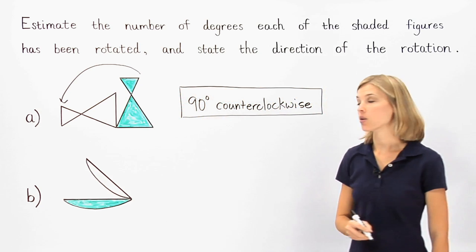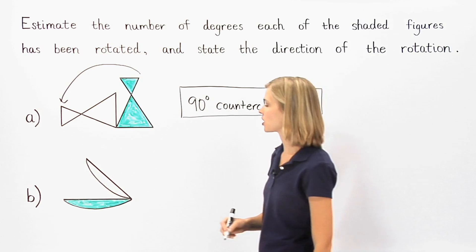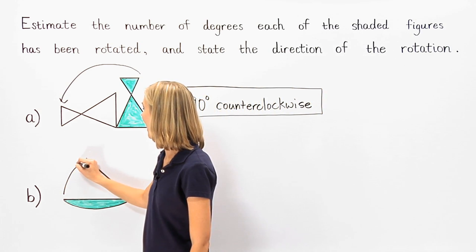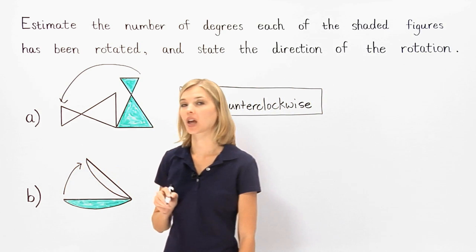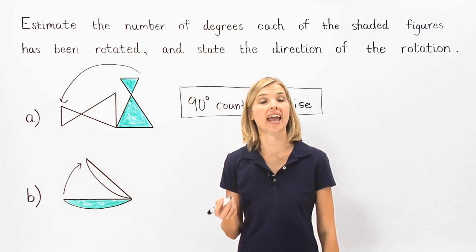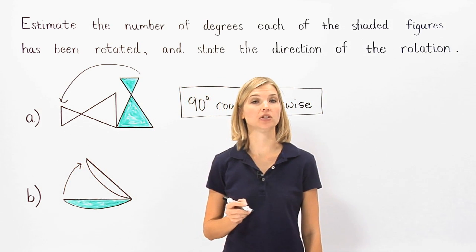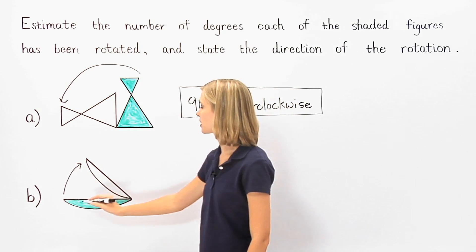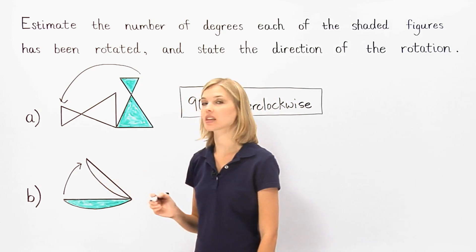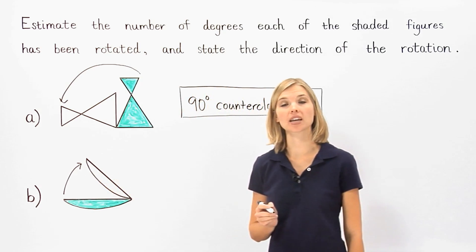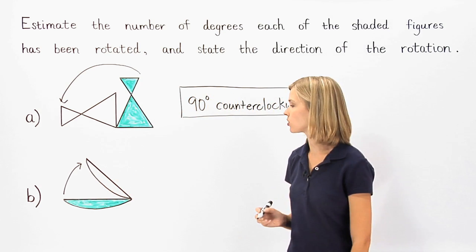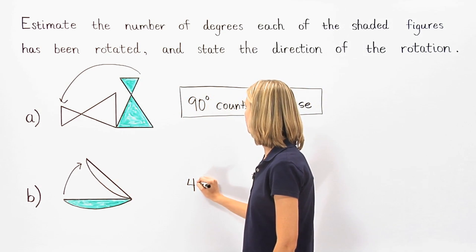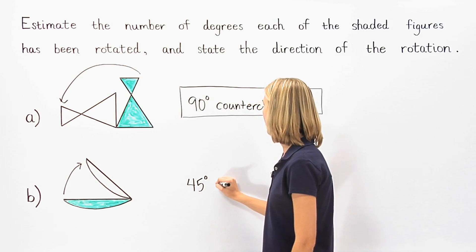In part B, we can see that the shaded figure has been rotated approximately an eighth of a turn to the right. Remember that an eighth of a turn is a 45 degree turn. And since the shaded figure has been turned to the right, we say that the rotation is clockwise. So the shaded figure has been rotated 45 degrees clockwise.